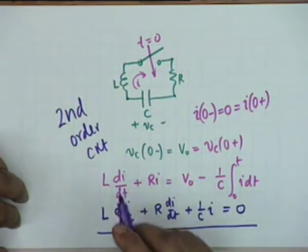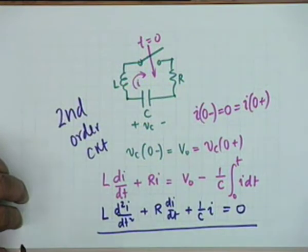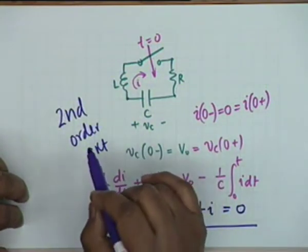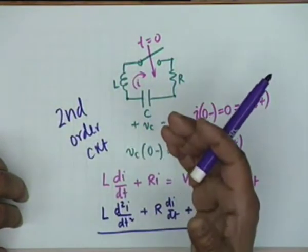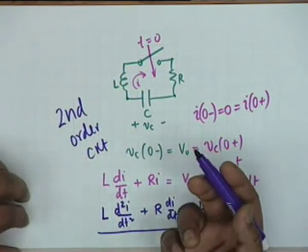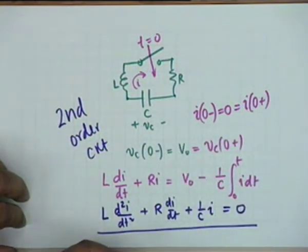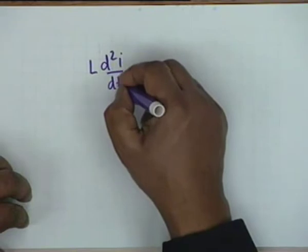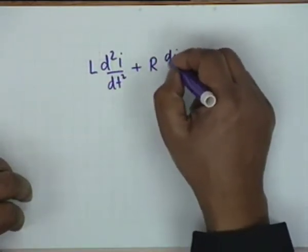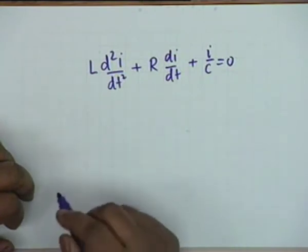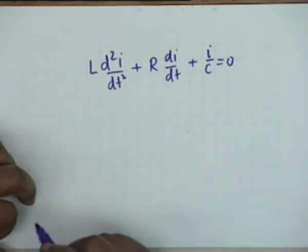Differentiating to remove the integral sign: L·d²i/dt² + R·di/dt + i/C = 0. This is a homogeneous differential equation of the second order, defining this as a second order circuit. The initial energy comes from the capacitor voltage. Alternatively, it could come from an initial electromagnetic energy in the inductor — for example, if the inductor had initial current i0 at t=0, connected across a capacitor and resistor, yielding the same second order differential equation.